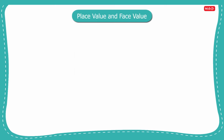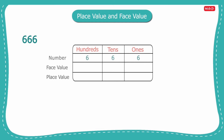Now let us take another three digit number, 666, and arrange its digits in their respective places. As all three digits are the same, the face value of six at ones place is six, at tens place is six, and at hundreds place is also six.